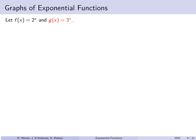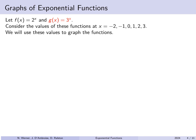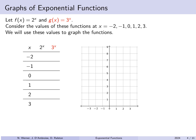Now let's suppose f of x is 2 to the x and g of x is 3 to the x — two separate exponential functions with different bases. We're going to plug in values of x from negative 2 to 3 and plot both on a set of coordinate axes. 2 to the minus 2 is 1 quarter, giving the point (−2, 1/4). 2 to the minus 1 is a half, giving (−1, 1/2). 2 to the 0 is 1, 2 to the 1 is 2, 2 squared is 4, and 2 to the third is 8, giving the point (3, 8).